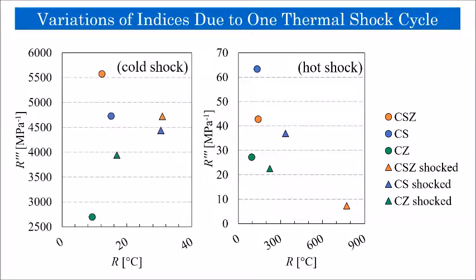For cold shock, CSZ and CS end up in comparable position after one cycle. These results qualify CS as the best candidate compared to the other two compositions for refractory applications where hot shock is applied.